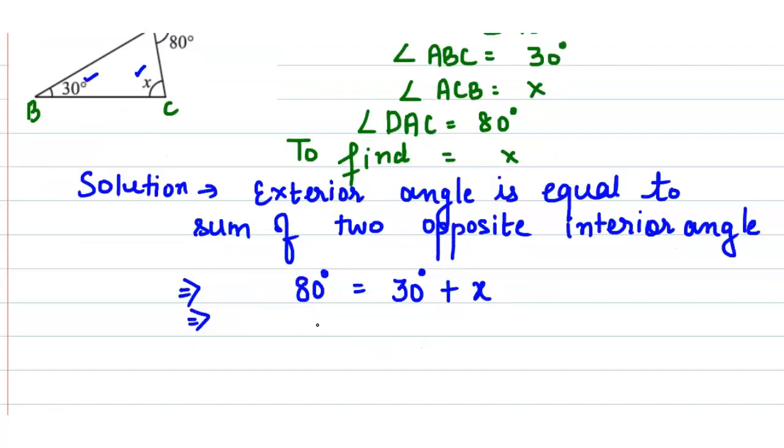From here we get the value of x which equals 80 degrees minus 30 degrees. Therefore x equals 50 degrees.